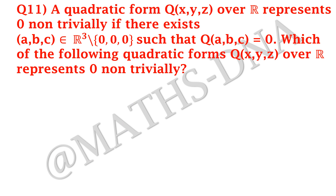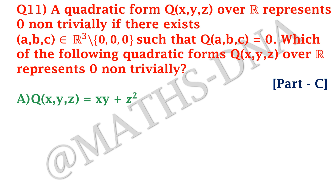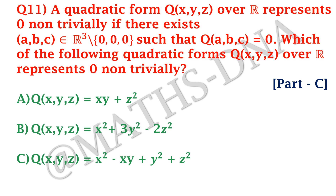The first question: a quadratic form Q(X,Y,Z) over R represents 0 non-trivially if there exists (A,B,C) belonging to R³ minus {(0,0,0)} such that Q(A,B,C) = 0. We have to find which of the following quadratic forms represents 0 non-trivially. Option A: Q(X,Y,Z) = XY + Z². Option B: Q = X² + 3Y² − 2Z². Option C: Q = X² − XY + Y² + Z². Option D: Q = X² + XY + Z².